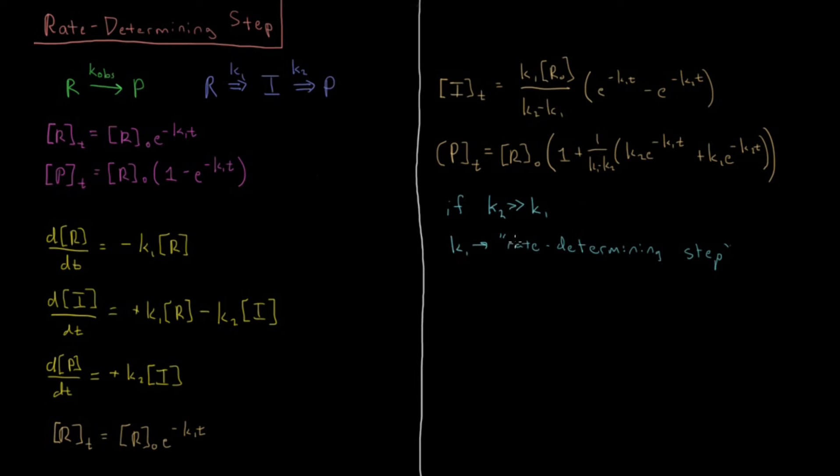So if we do that, if k2 is much, much greater than k1, that means that k1 minus k2, the k1 basically goes to zero. So you have minus k2 here. Then at this minus k2, it cancels with the k2 on the top. So you just get a minus one up on top.